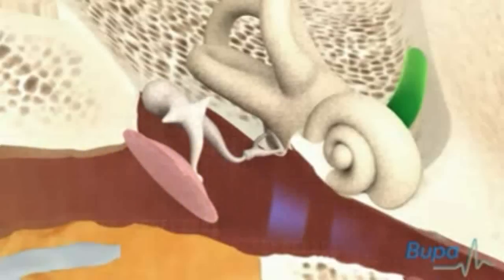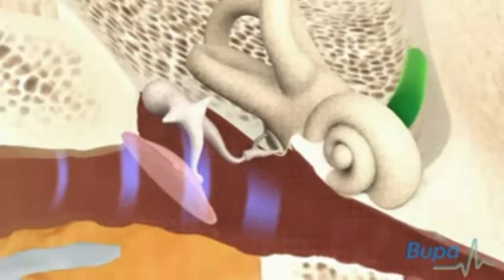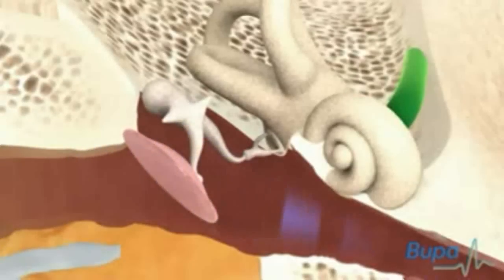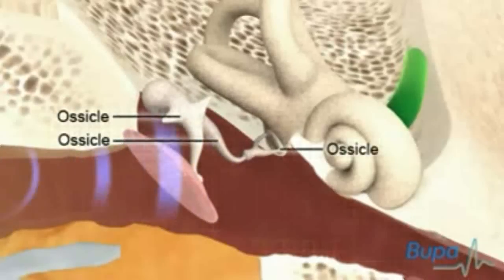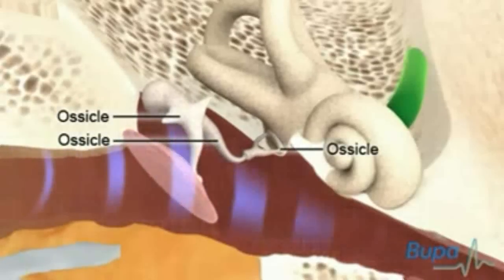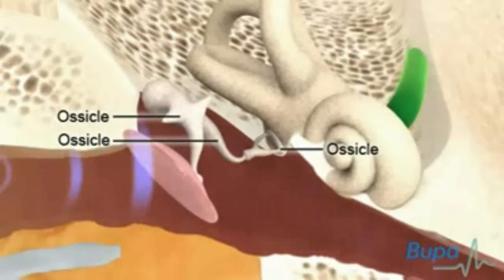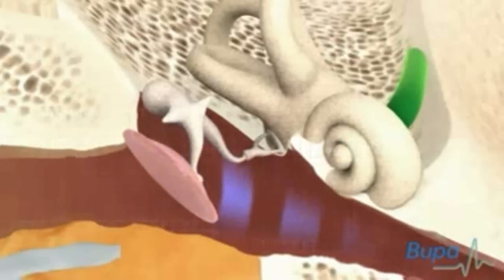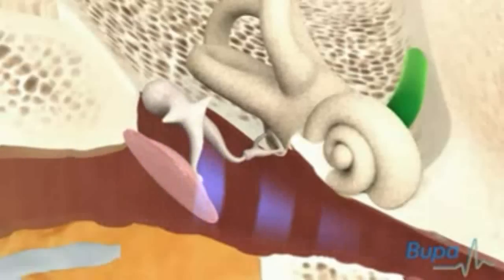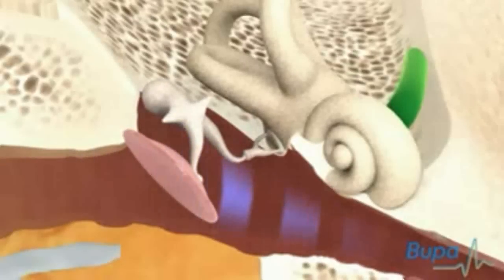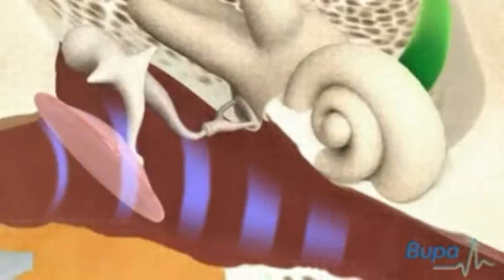These vibrations are then passed on to the middle ear. The middle ear contains three tiny bones called the ossicles. These are joined together and to the eardrum. They amplify the sound wave and pass it on to the inner ear. Here we show the ossicles moving in response to the sound waves.